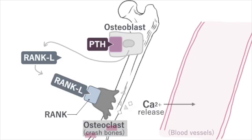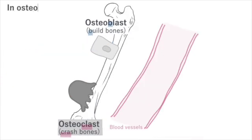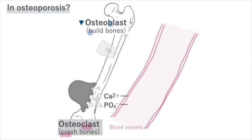You can remember it like this: RANK-ligand → RANK → break bones. In osteoporosis, decreased osteoblast function or excessively activated osteoclasts promote the disease.